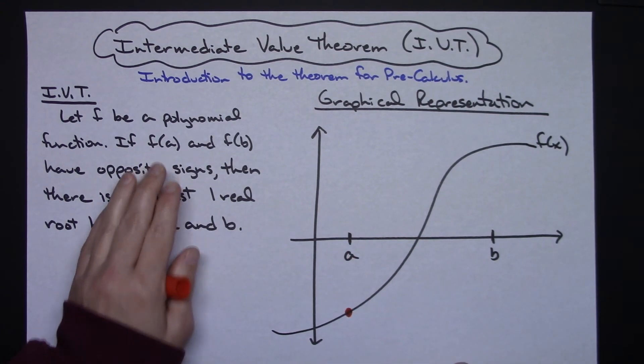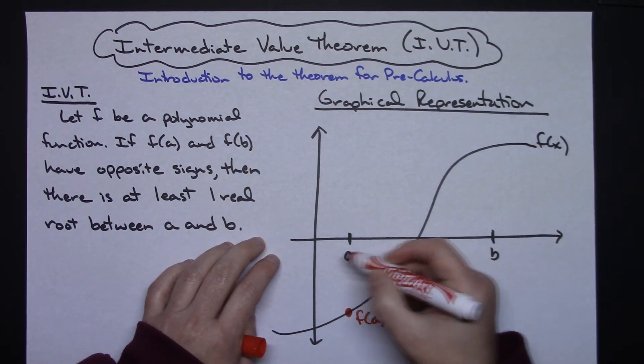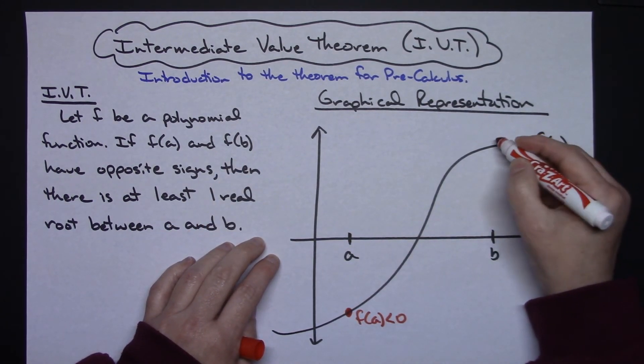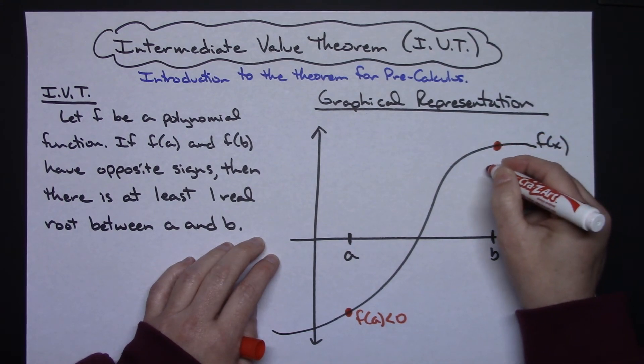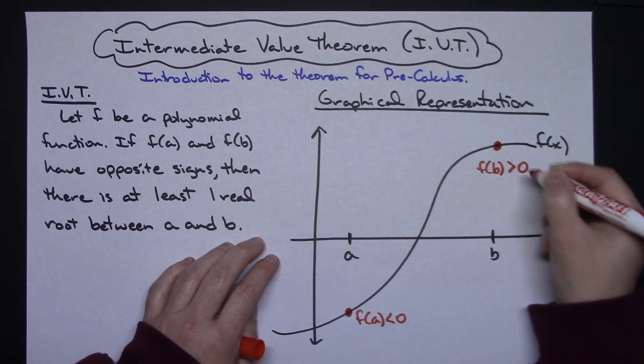If I do F of A, I would go to A, plug it into the function, and it would be right there, in which case F of A would be less than zero or negative.